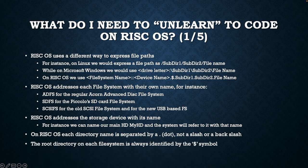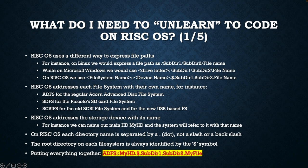The root directory on each file system is always identified by the dollar symbol, and to refer to the current directory we are in, we use the at symbol. Putting everything together, this is how a full path name to a file called MyFile would look like on RISCOS.